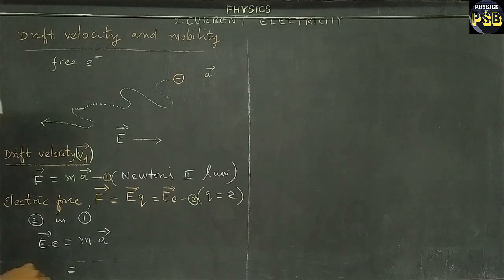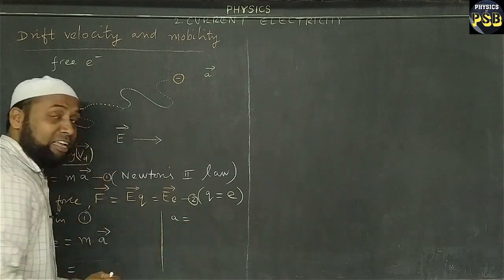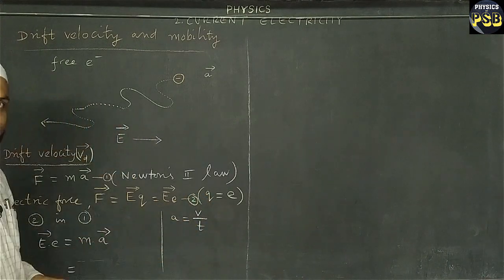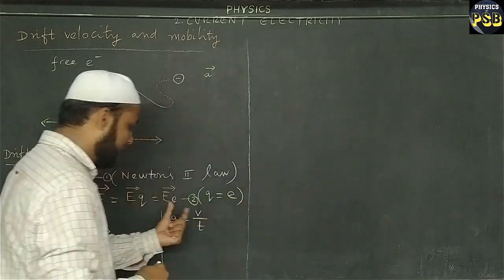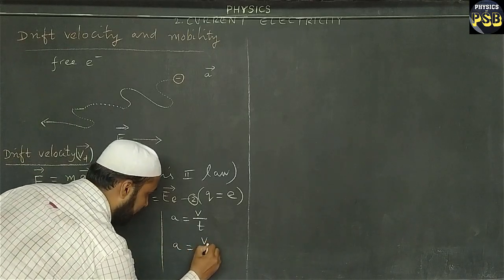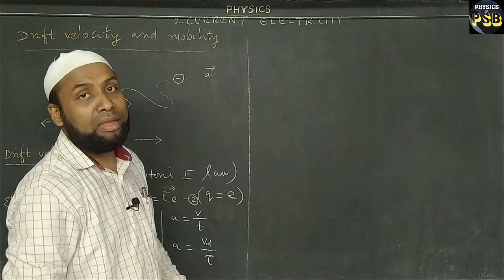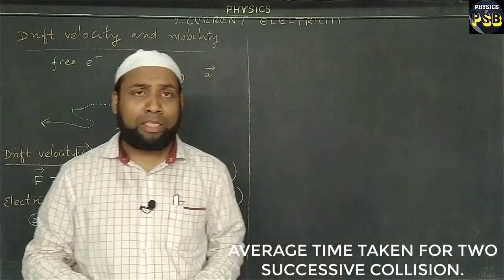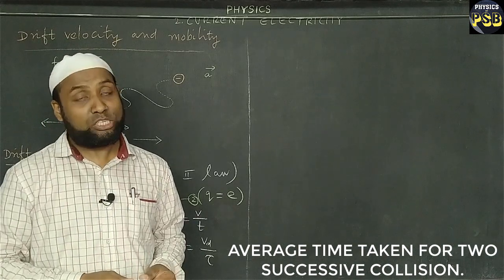Now we know that acceleration is the rate of change of velocity. But here I make a small change of this expression. In our case, velocity is drift velocity, denoted by letter Vd, and T is replaced with tau. Now, tau is the mean free time. What is this mean free time? Mean free time is nothing but the time taken by a free electron between two successive collisions.